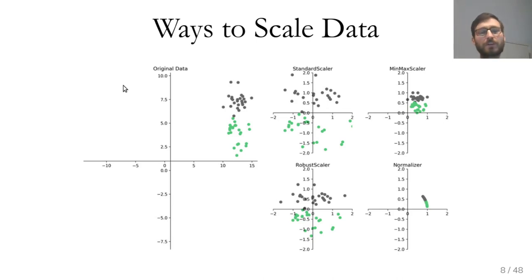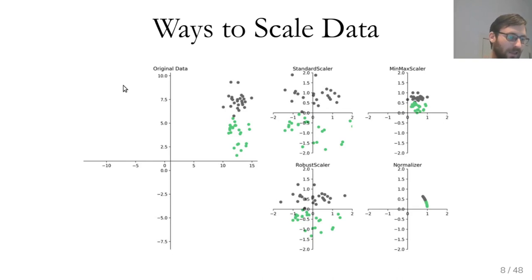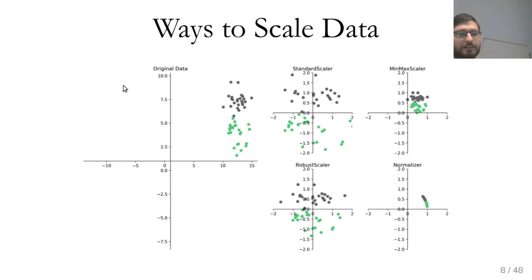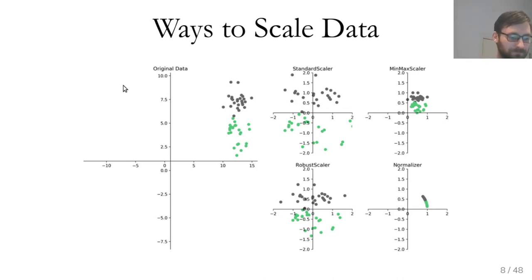One standard way to scale is zero mean, unit variance — in scikit-learn that's the StandardScaler. It computes the mean of the training data, subtracts it, and divides by the standard deviation. This is by far the most common and makes sense for blob-shaped data. Another very common method is the MinMaxScaler, which scales every feature between a minimum and maximum — usually zero and one, or minus one and one. MinMaxScaler is useful for features that have very clear boundaries.